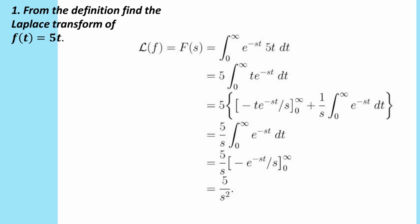We had f of t equals 5t. If we want to work out the Laplace transform, we're going to drop it in the formula with the integrals. And you can see right down the bottom here, we have actually ended up with the function in s, as we would expect. We can take the 5 out of the integral.